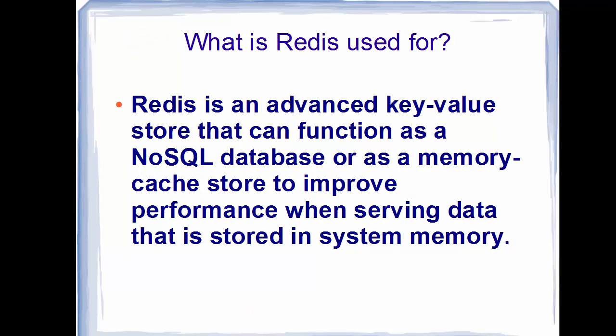What is Redis used for? As mentioned, it's an advanced key-value store that can function as a NoSQL database or as a memory cache store to improve performance when serving data stored in system memory. It can also be used as a message broker, and it can be used in place of caching systems such as Memcached.